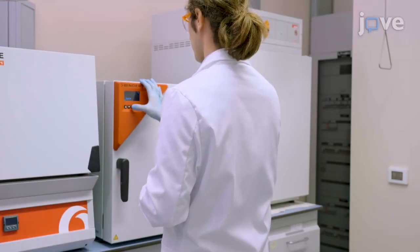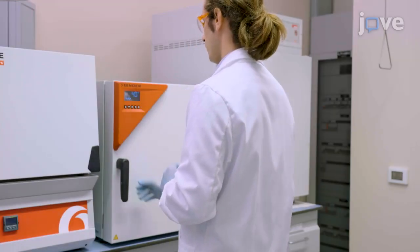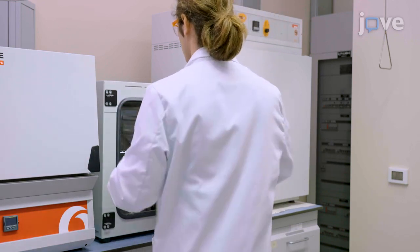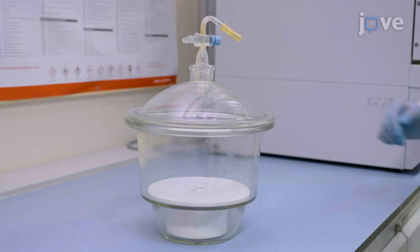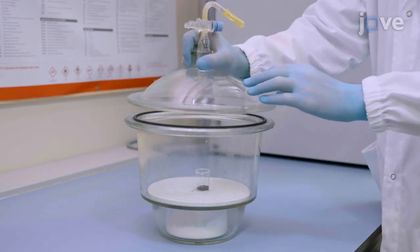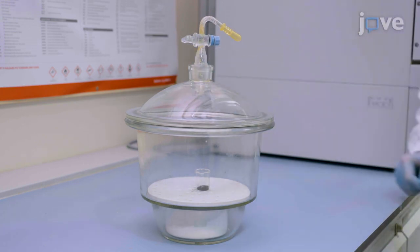Begin by pre-treating 100 mg of the lignin or tannin sample by drying overnight in a vacuum oven at 40 degrees Celsius. After drying, rapidly transfer the sample to an anhydrous calcium sulfate desiccator until it reaches room temperature.